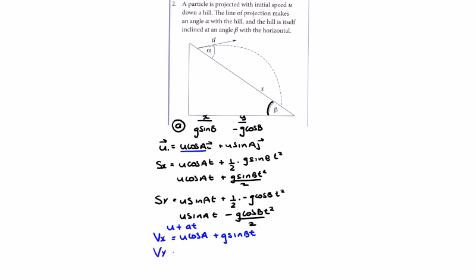And the velocity in the y direction, it's going to be u sin a, plus the acceleration, which is minus g cos b times t.